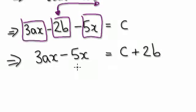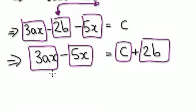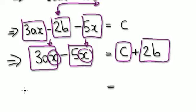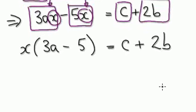Then take the c down on the right hand side and add 2b. Now you've got this block, take away this block, and whatever is on the other side. Keep an eye on the x's — x appears here and here. So let's factorize: take the x out. X bracket 3a take away 5, close it, and then blah blah blah over here.